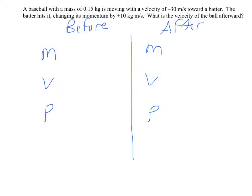So in this case we're talking about a baseball, so its mass is 0.15 kilograms. It's going to be 0.15 kilograms after as well. It's moving at a velocity of negative 30 towards a batter. You might say, well, what's negative? That means it's moving, we're going to say to the left. It doesn't really matter, but it's moving in a particular direction. The batter hits it.